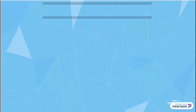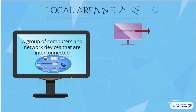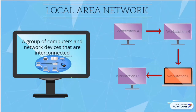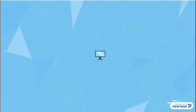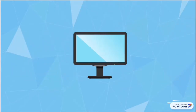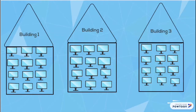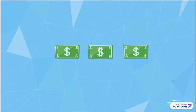So what is a LAN? A local area network is a group of computers and network devices that are connected, usually within the same building. They can range in size from a few computers in a single office to hundreds of devices spread across several buildings. LANs are also relatively inexpensively set up and have a high data transfer rate.